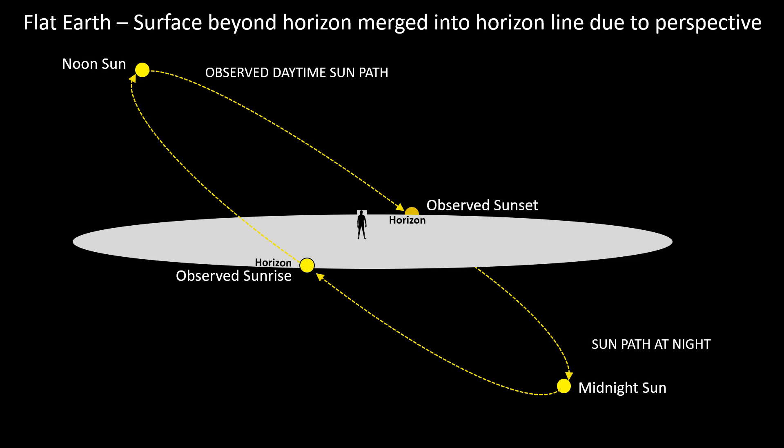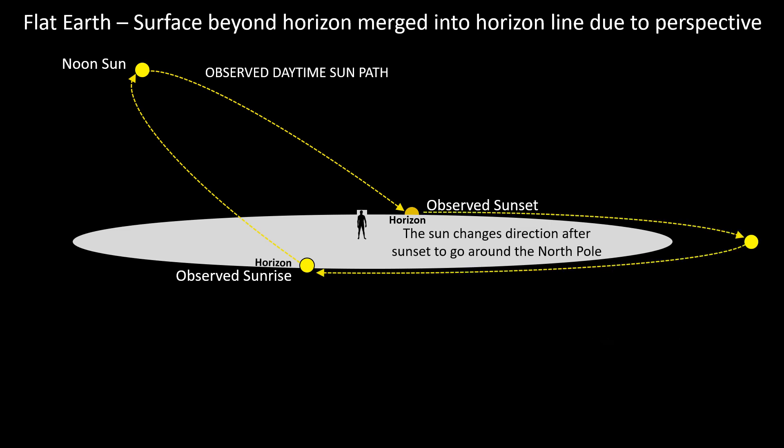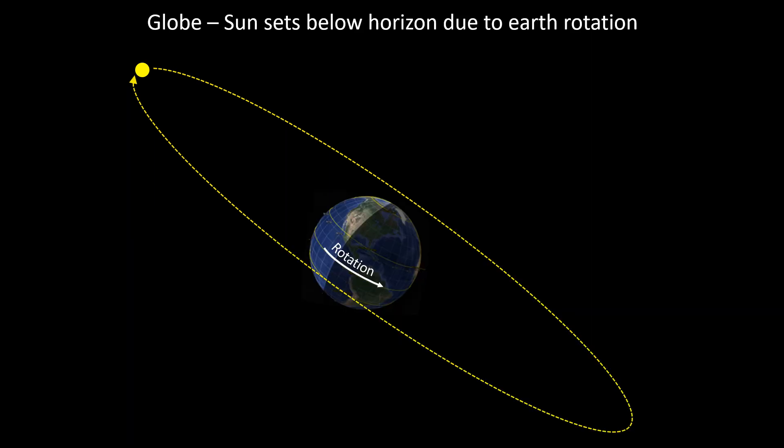But how would this work on a flat earth? Flat earthers claim that all celestial bodies are above the surface of the earth, and the surface beyond the horizon is merged into the horizon line due to perspective — so we should never see any celestial body travel below the horizon. That would be impossible. Not only would the sun have to change direction after sunset to go around the north pole, it would have to change direction again before sunrise to rise above the surface of the earth. This makes absolutely no logical sense at all, especially when it is so easy to understand how this works on a rotating earth.